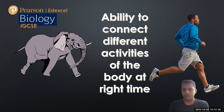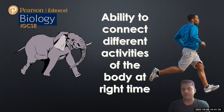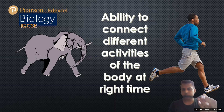We can only see the man running fast. If the man wants to run faster, he needs more energy. If he needs more energy, he has to take in more oxygen, and that oxygen should be delivered to the muscles. The muscles also need more nutrients and glucose delivered to them.